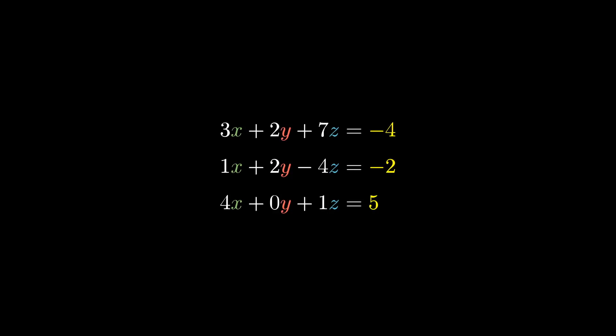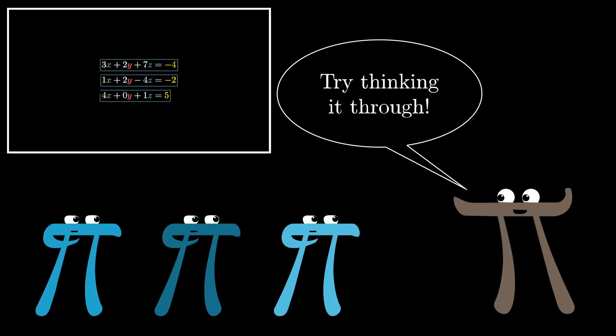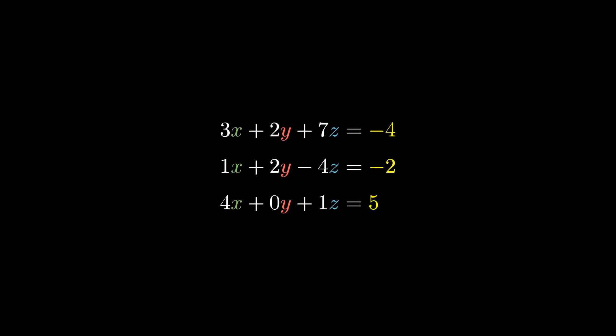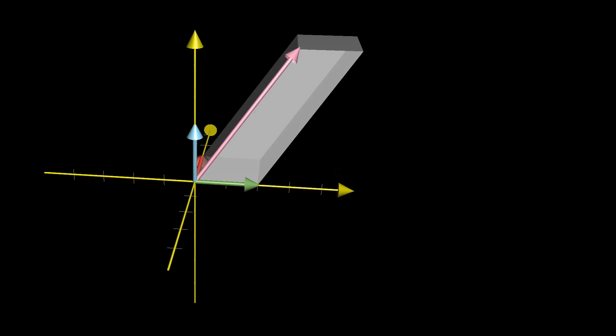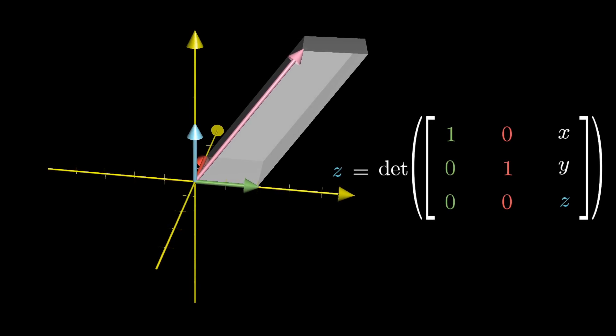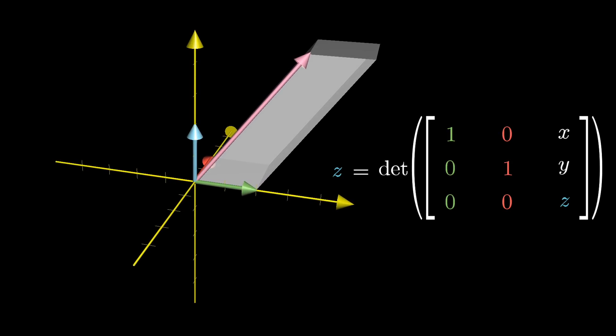The case with 3 dimensions or more is similar, and I highly recommend that you take a moment to pause and think through it yourself. Here, I'll give you a little bit of momentum. What we have is a known transformation given by some 3x3 matrix and a known output vector given by the right side of our linear system, and we want to know what input lands on that output.